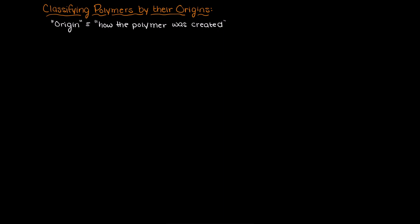When talking about the origins of polymers there are two main categories: natural and synthetic polymers.